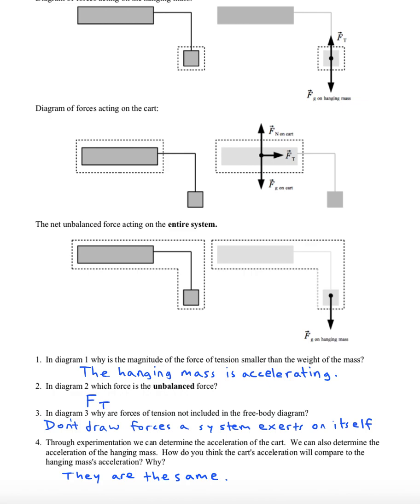They are the same. We know this because the string between them does not go slack and it does not break. If they were accelerating at different rates, then the string wouldn't stay taut. The fact that it stays taut and has tension on it means that they are accelerating with the same rate.